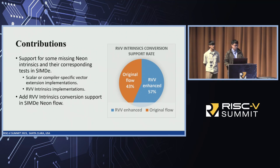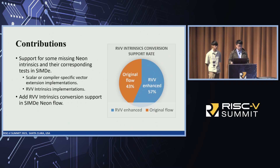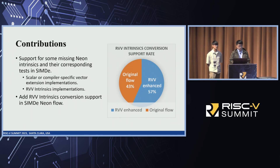Here are our two main contributions. The first is we added support for some Neon intrinsics and their corresponding tests in SIMD Everywhere. For each instruction, we use scalar or compiler-specific vector extension implementations, and also RVV intrinsics if needed. Overall, we completed RVV intrinsic coverage to about 57% support rate of the instructions. The second contribution is that we added RVV intrinsic convergence support in the SIMD Everywhere Neon flow. Now we go to Zhu Hong for the detailed design.